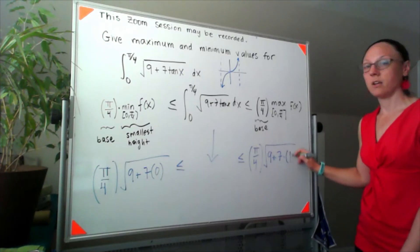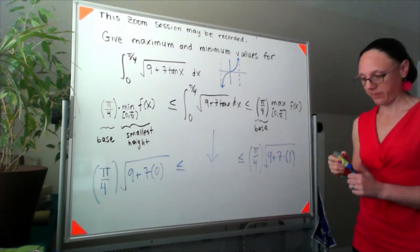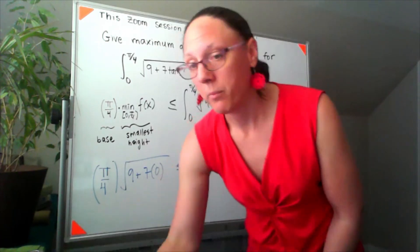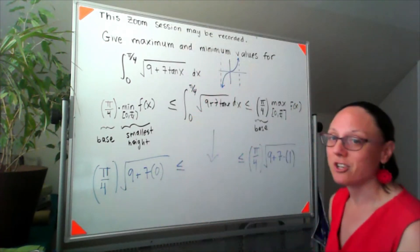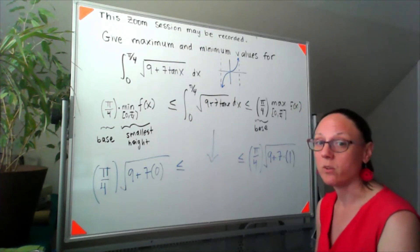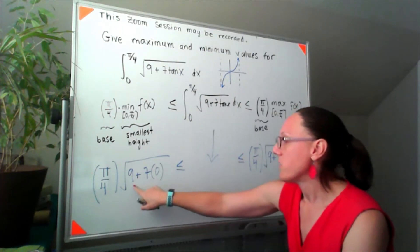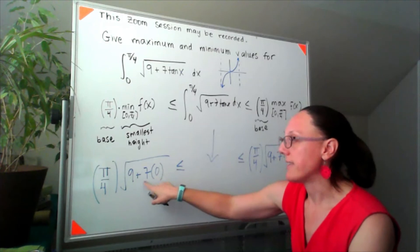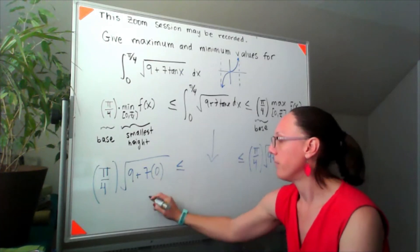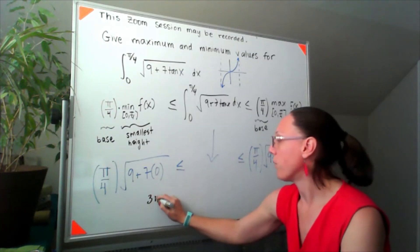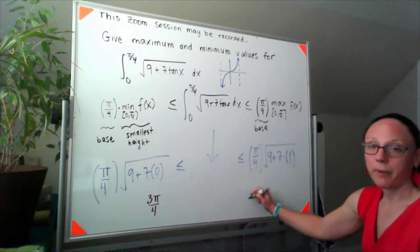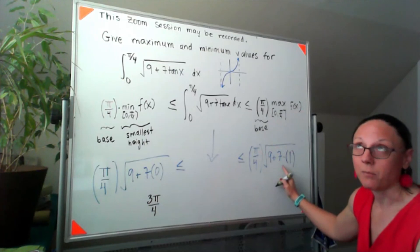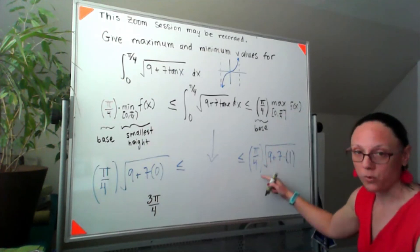We can clean up both of those. There is most definitely an expectation that you've got those nice trig values memorized. So zero times seven, I get zero. Square root of nine is three, so my lower bound would be three pi over four. And my upper bound, nine plus seven, I'm at sixteen. Square root of sixteen is four. Those fours will cancel out.